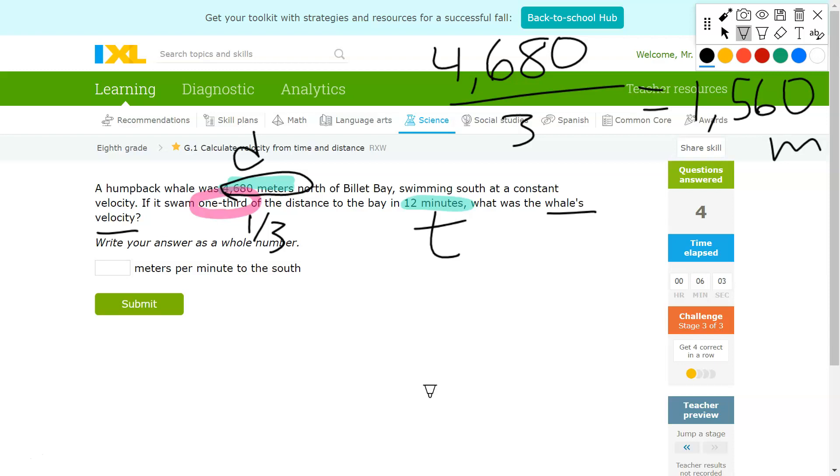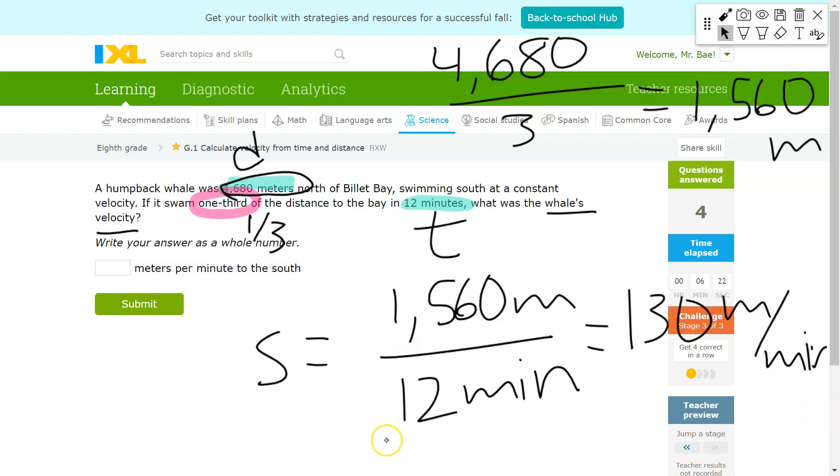You would then have to take that value and divide by 12 minutes. If you do that, your answer comes out to 130 meters per minute. And that is what you'll put down in the answer box right there.